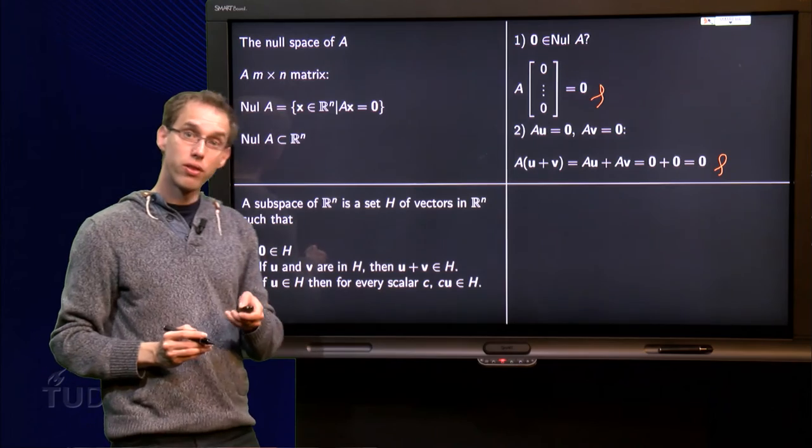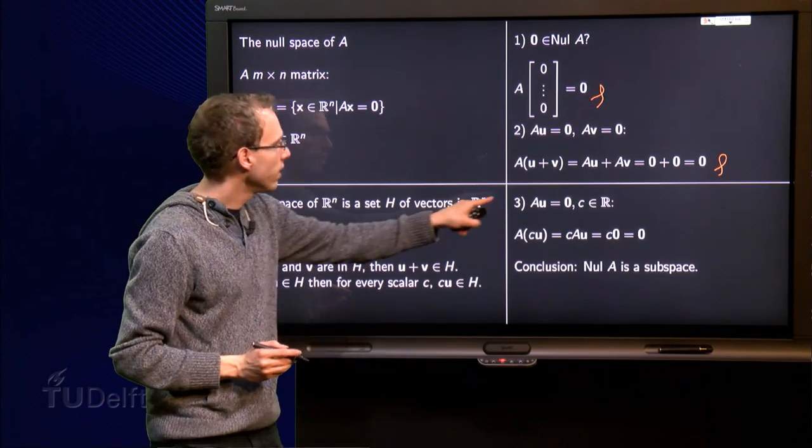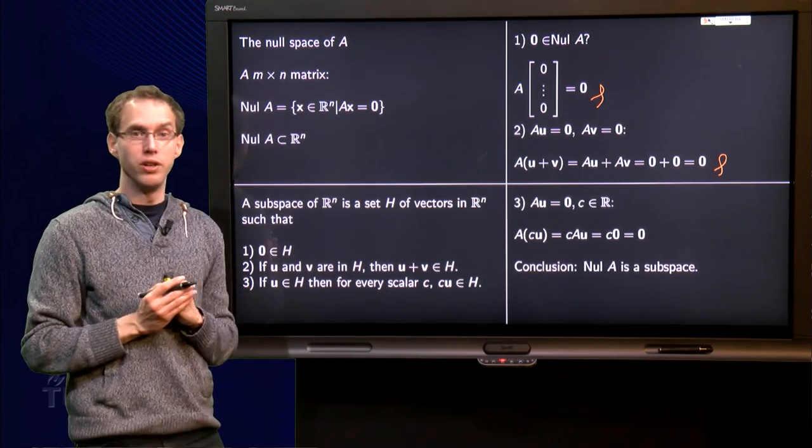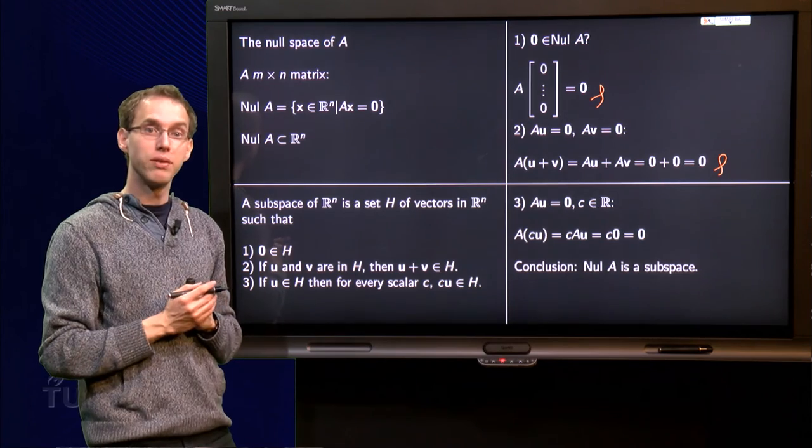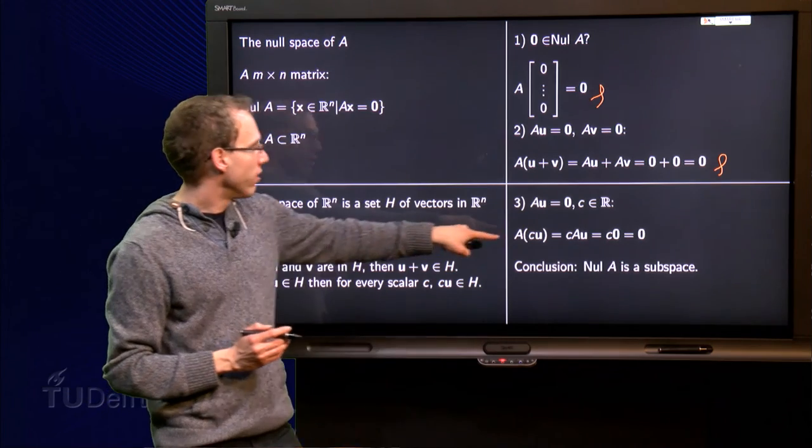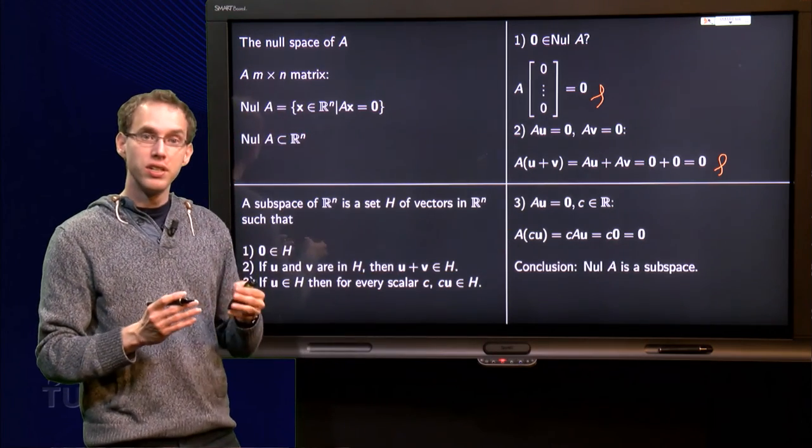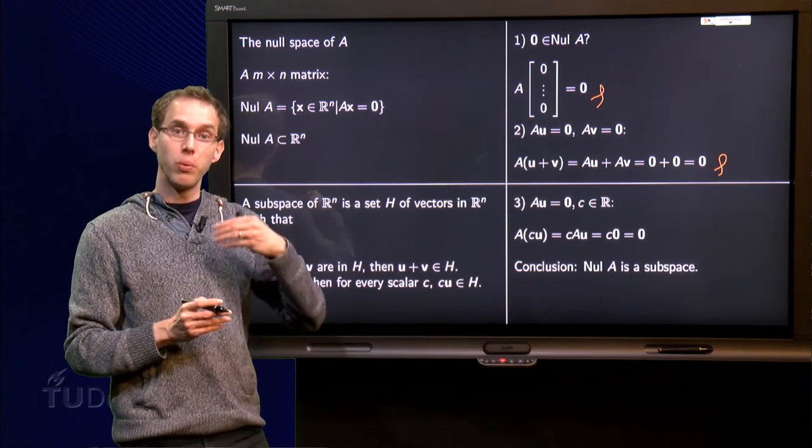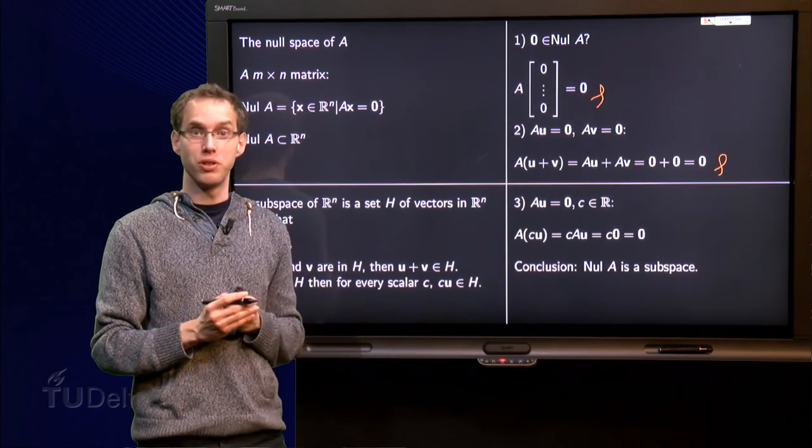Let us go on to the third property. So suppose I have some u in a null space, so A times u equals zero, and some scalar c, c in R for example. Then we compute A times c times u, because we want to know whether c times u is also in a null space.